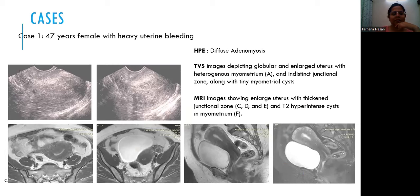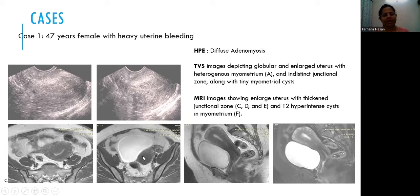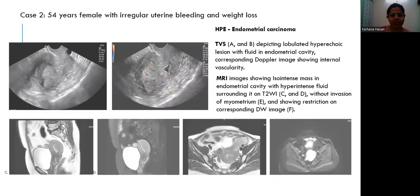Let's discuss some cases. The first case is a 47-year-old woman with heavy uterine bleeding. On transvaginal sonography we see a globular enlarged uterus with heterogeneous myometrium and indistinct junctional zone along with tiny myometrial cysts. On MRI, it shows an enlarged uterus with thickened endometrial junctional zone and T2 hyperintensities in the myometrium. On histopathological examination, it is shown as diffuse adenomyosis.